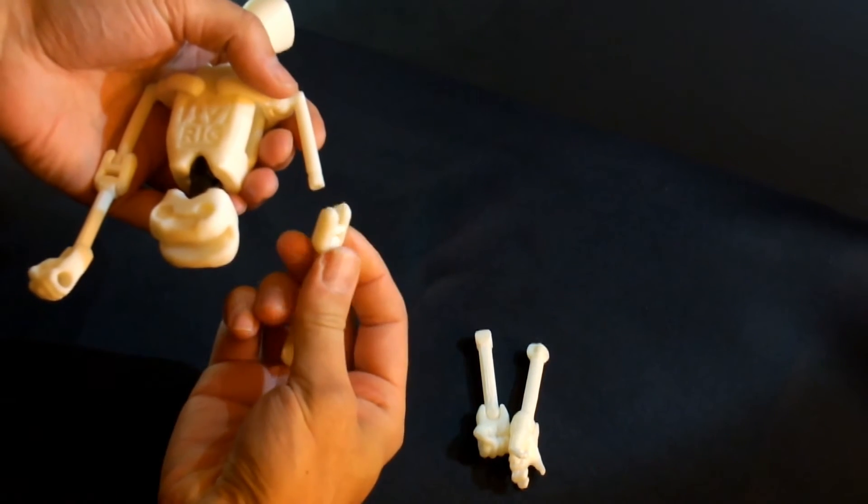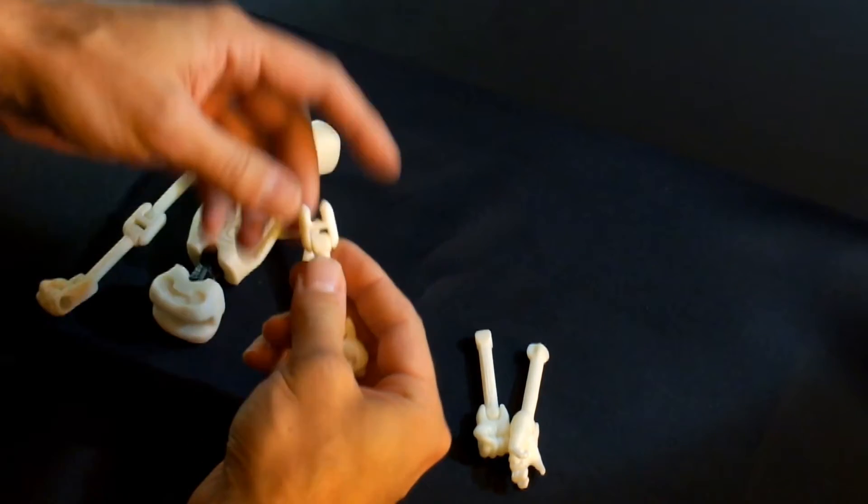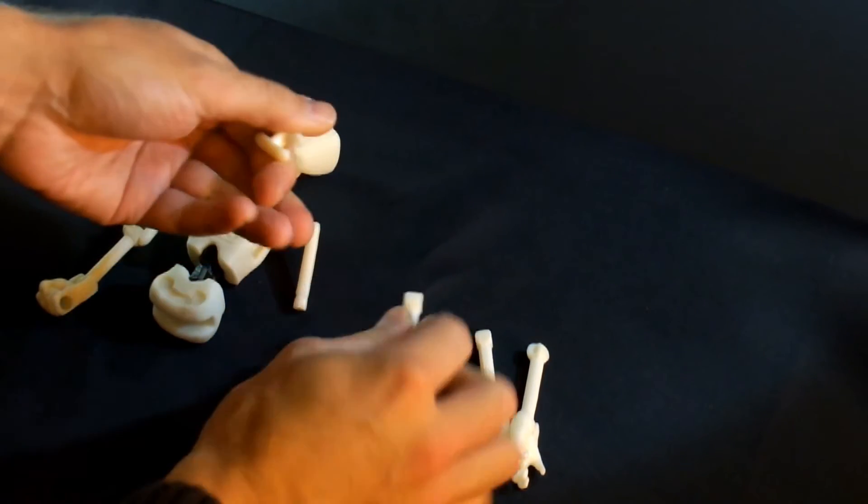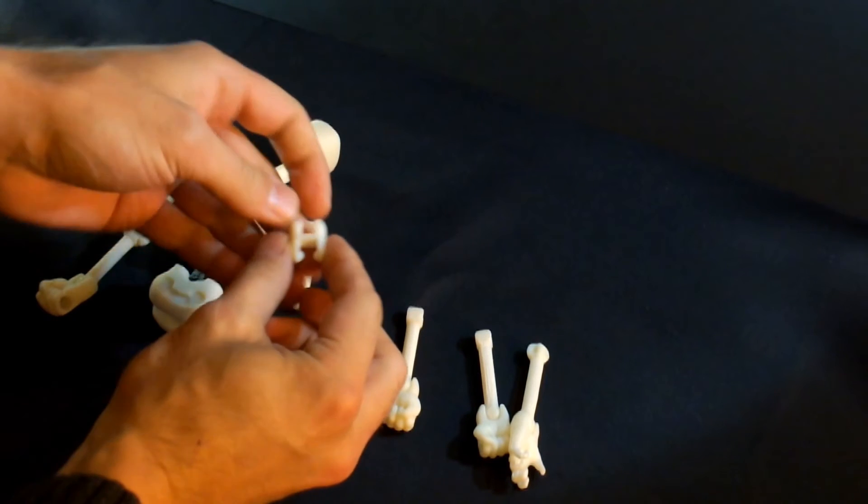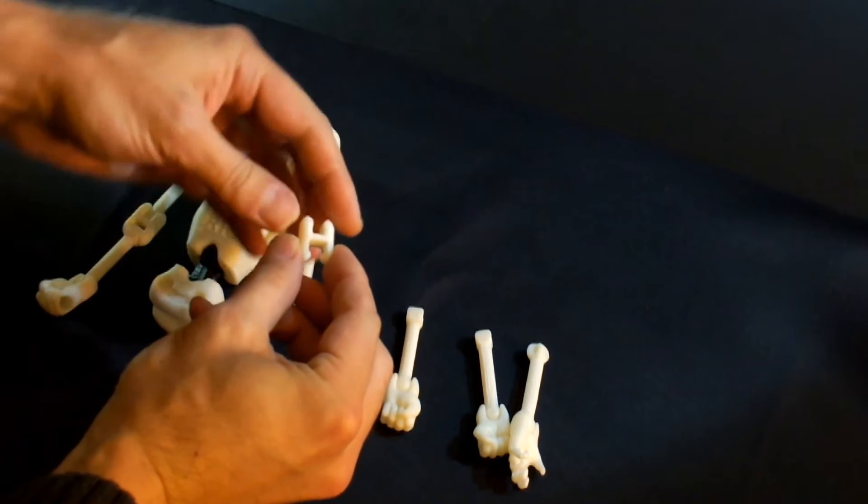The first thing you want to do is pull the H joint off of the humerus or the upper arm because that releases enough pressure so you can then remove the H joint from the forearm itself.